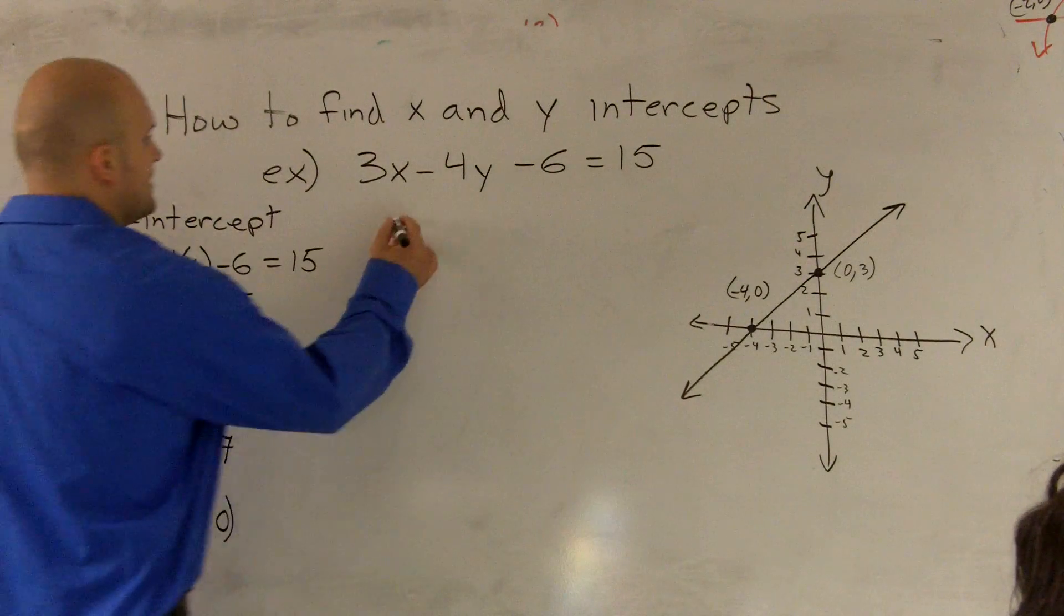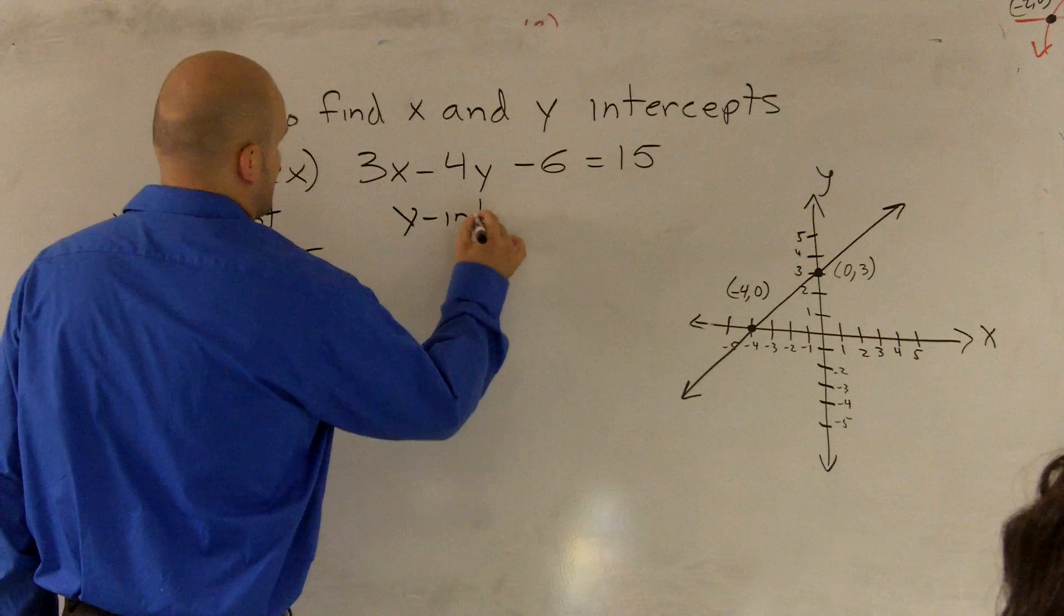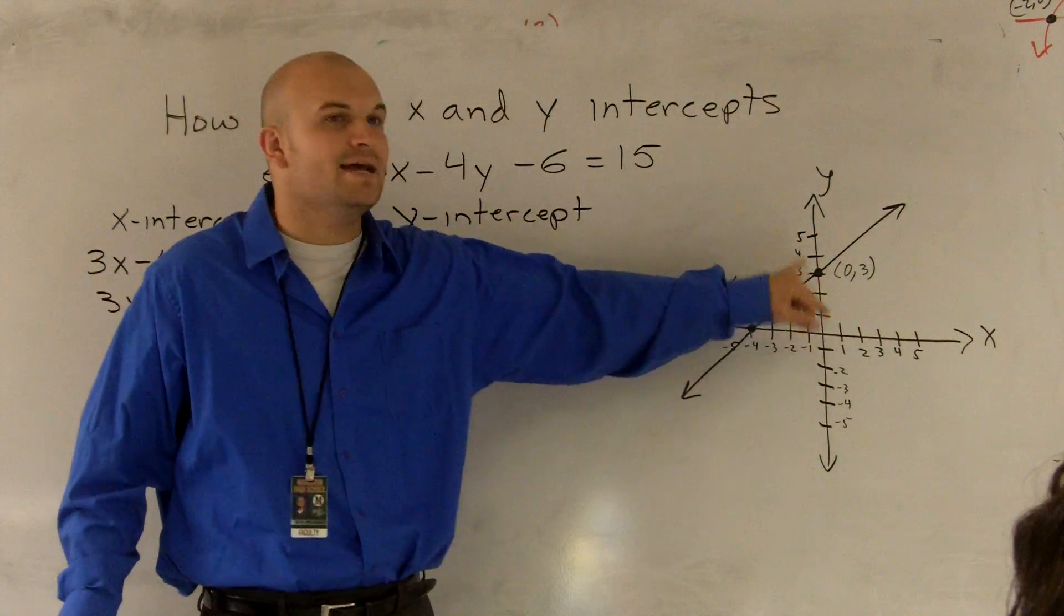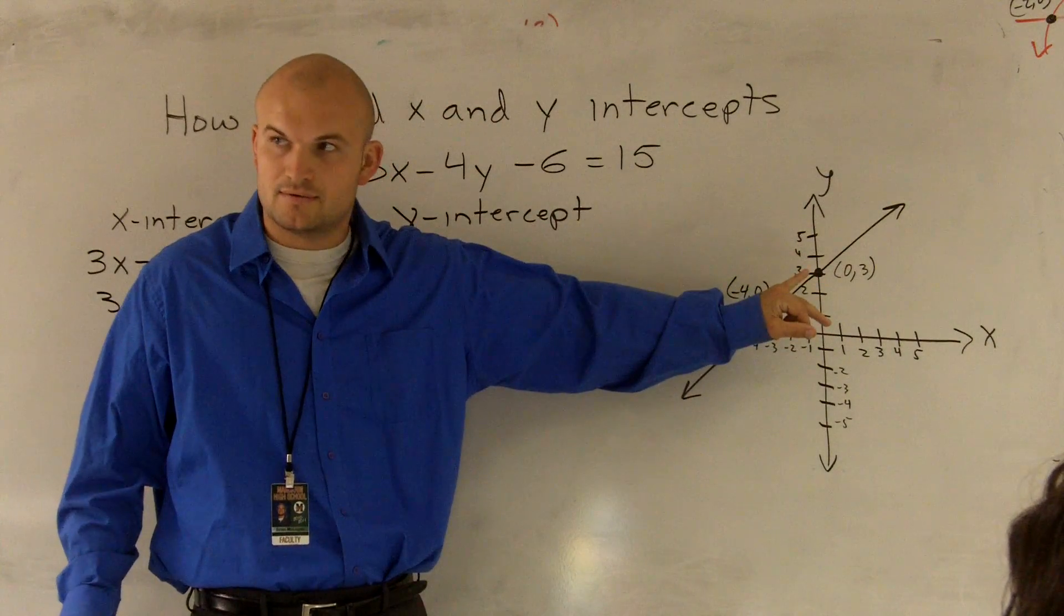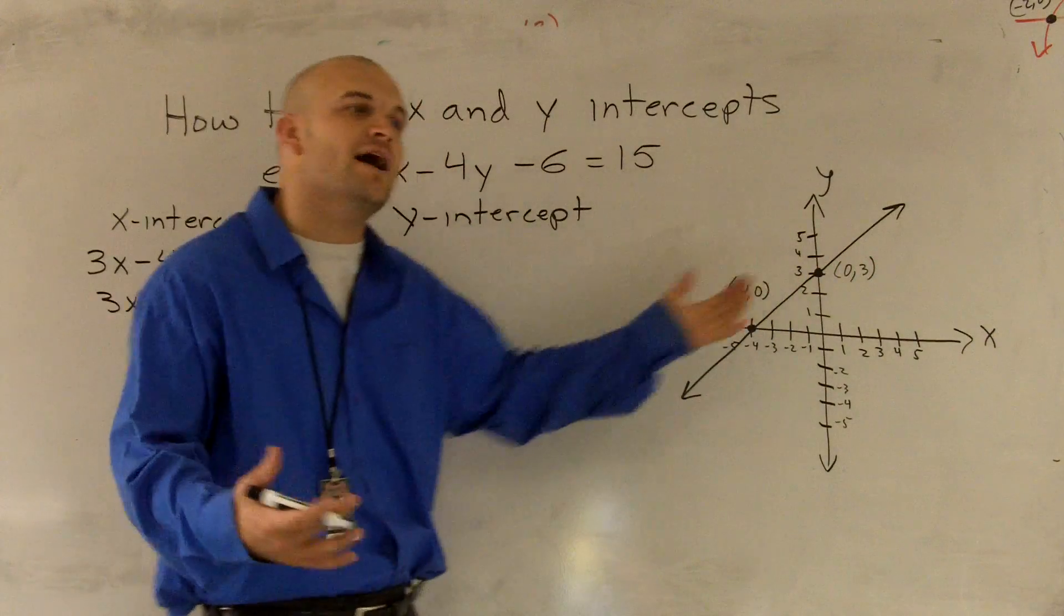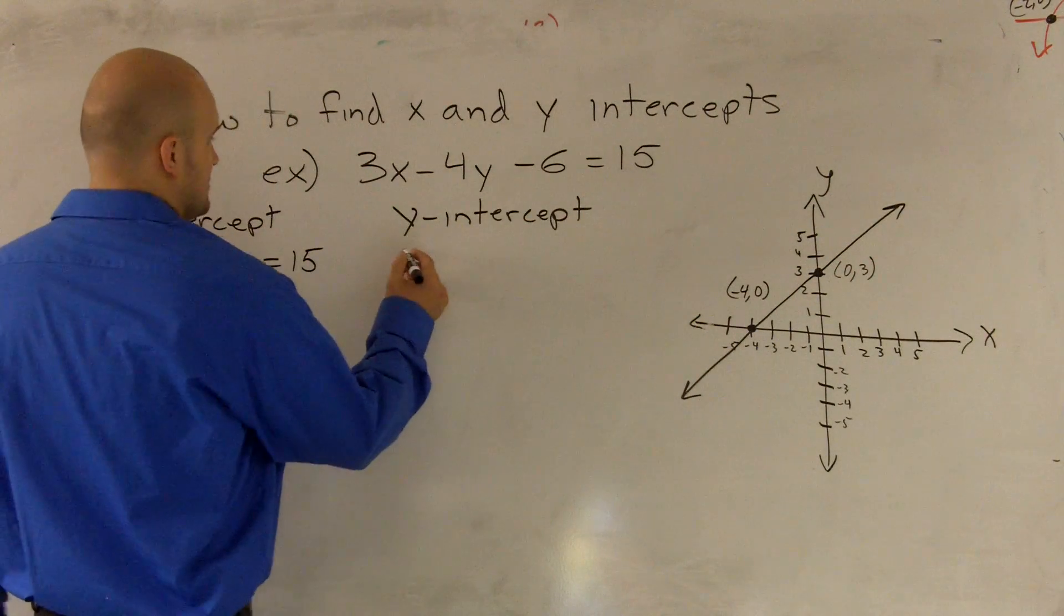Now, when I go ahead and find the y-intercept, again, looking back at this graph, I know my x-value is 0. So what I need to do now is plug in a 0 for x and solve for y.